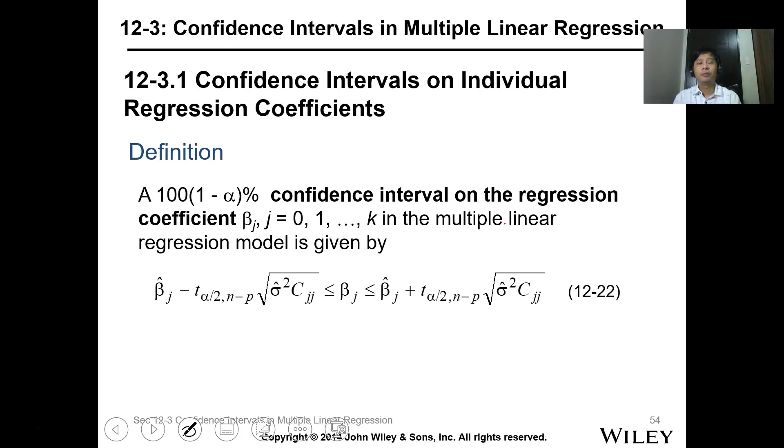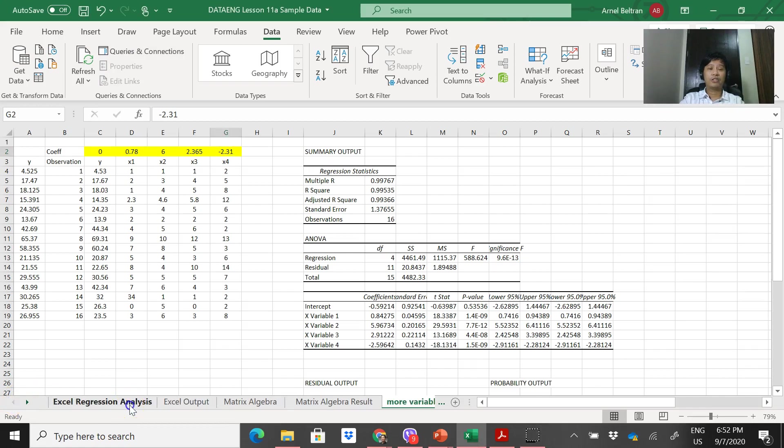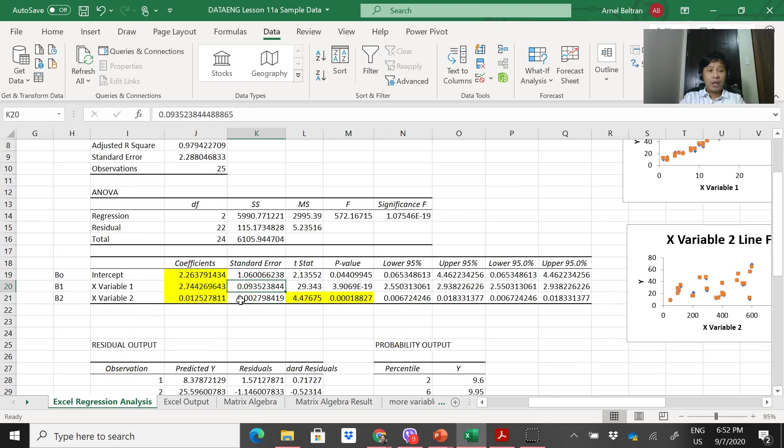So let's continue. How about confidence interval? For confidence interval on individual regression coefficient, you just use this formula. Let's go back to the Excel output of our regression analysis.